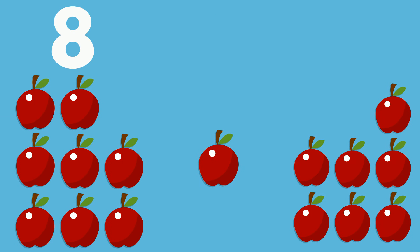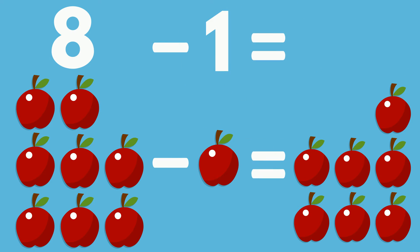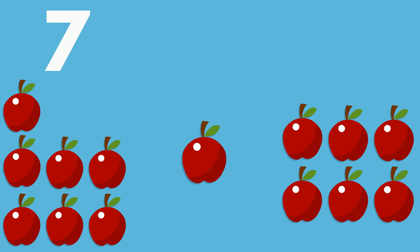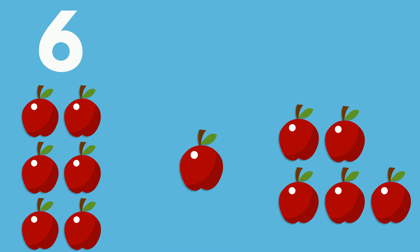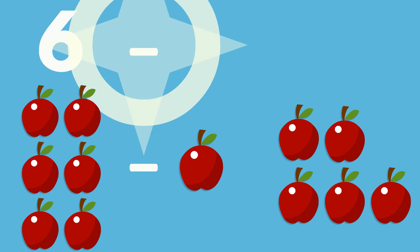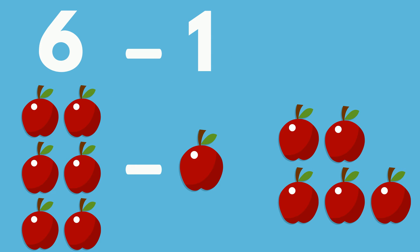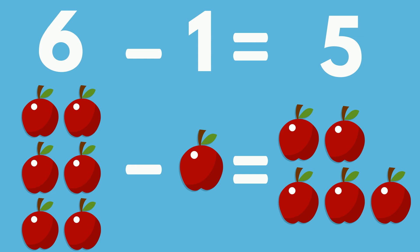8 apples minus 1 apple equals 7 apples. 7 apples minus 1 apple equals 6 apples. 6 apples minus 1 apple equals 5 apples.